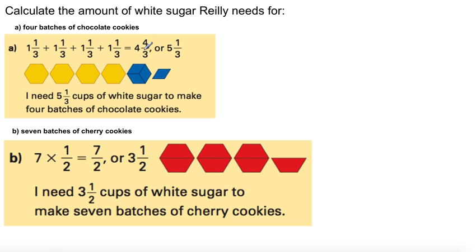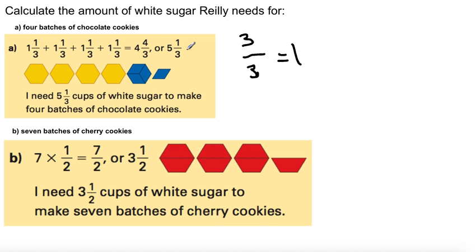Now, the reason 4 and 4 over 3 becomes 5 and 1 third is because what makes the whole here? 3 over 3. How many 3 over 3s do you have in there? You've got 1. So 3 over 3 equals 1 — take that out and give it to the big number. That's why you have 5. And what's left over? 1 over 3, which is 1 third. Take notes and I'll explain tomorrow in class.